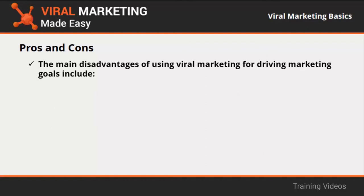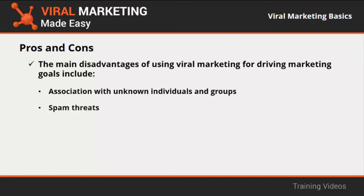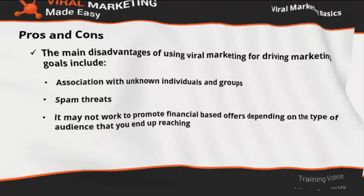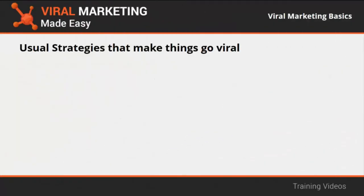The main disadvantages of viral marketing include association with unknown individuals and groups, since viral marketing heavily depends on how a message is transmitted from person to person — people you'd rather not interact with can easily be reached. Spam threats are also a concern: when not correctly planned, your campaign will either come across as spamming or you might become the target of spammers. It may also not work to promote financial-based offers depending on the audience reached.